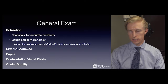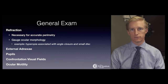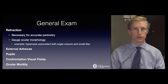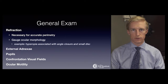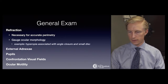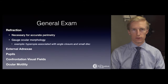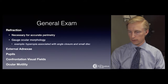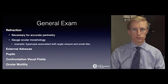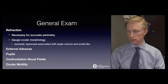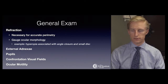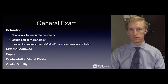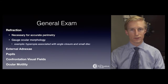The general exam, in addition to basic components like assessing visual acuity, includes refraction, which is necessary to perform accurate perimetry to assess the patient's field of vision. It's also necessary to gauge ocular morphology. For example, a patient who is hyperopic may have a higher risk of developing angle closure glaucoma and may have a smaller disc, while a myopic patient may have a larger disc and more open angles.